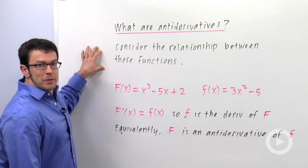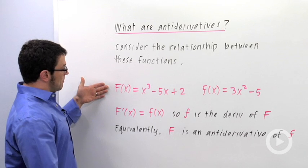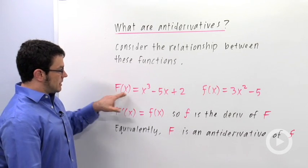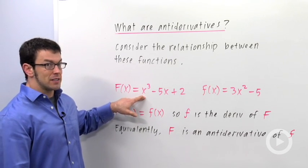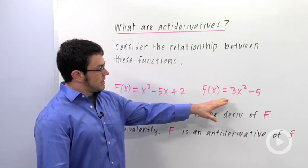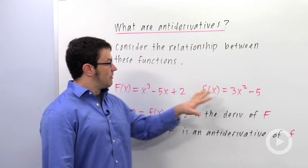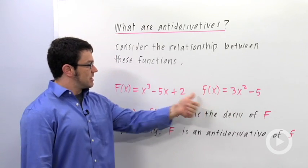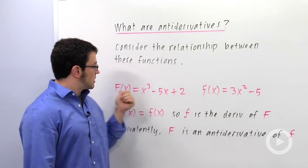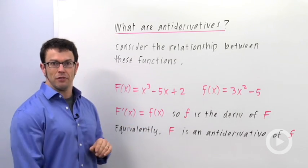Let's consider the relationship between two functions I have written up here. Capital F of x equals x cubed minus 5x plus 2. Little f of x is 3x squared minus 5. Now notice, I've given these functions the same letter for the name, but this one's capital, this one's lowercase. So consider them different functions.